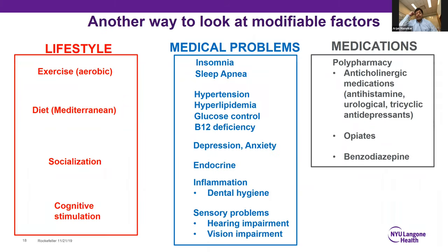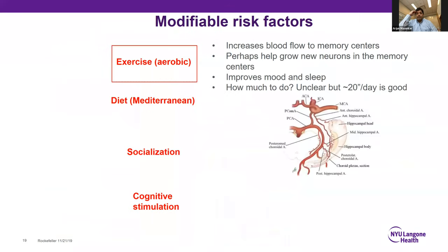One way to categorize fixable or modifiable factors is: lifestyle, medical problems, and medications. In terms of lifestyle, one important component is exercise — specifically aerobic exercise. We think exercise is good for the brain because it increases blood flow to the memory centers, may help grow new neurons in those centers, and helps mood and sleep, which in turn helps memory. About 20 minutes a day of a brisk walk is perfectly fine.